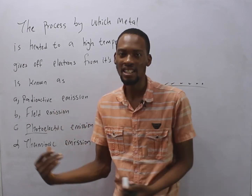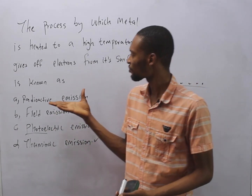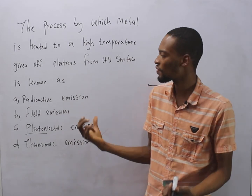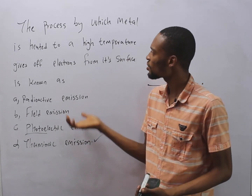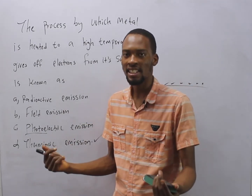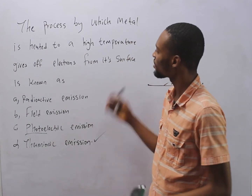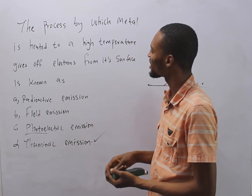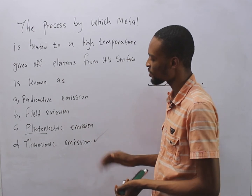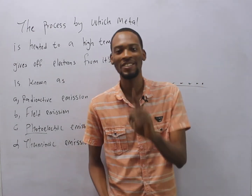Field emission is emission that occurs when the material is subjected to an electrostatic field, so it begins to emit electrons off its surface. So once again, the process by which a metal is heated to a high temperature and gives off electrons from its surface is known as thermionic emission.